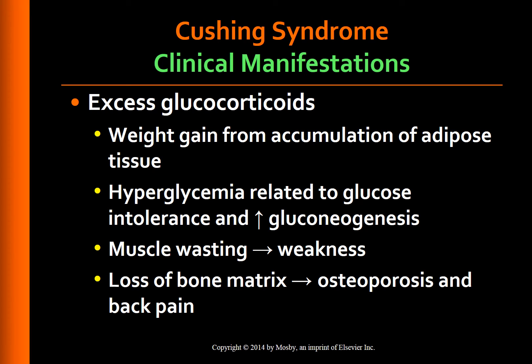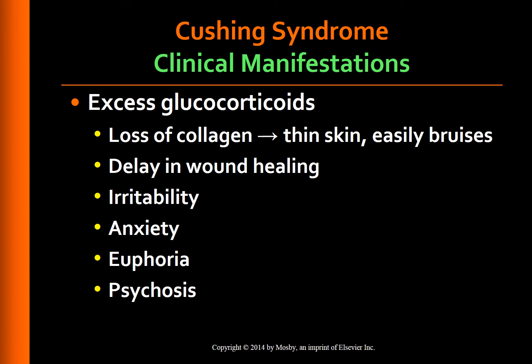Hyperglycemia occurs because of glucose intolerance associated with cortisol-induced insulin resistance and increased gluconeogenesis by the liver. Muscle wasting causes weakness, especially in the extremities. A loss of bone matrix leads to osteoporosis and back pain. The loss of collagen makes the skin weaker and thinner and it bruises easily. Catabolic processes lead to delay in wound healing. Irritability, anxiety, euphoria, and occasionally psychosis may also occur.